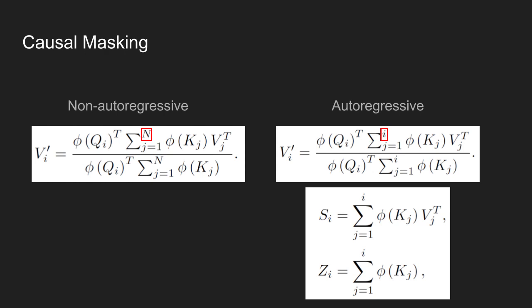In the autoregressive formulation, because we have to calculate each query with different key value matrix, naively calculating K and V for each element i results to quadratic complexity. Instead, Si and Zi in the slide can be computed efficiently with linear time and constant memory. Instead of calculating Si and Zi for each element, we can take previously calculated Si-1 and Zi-1 to compute current Si and Zi.